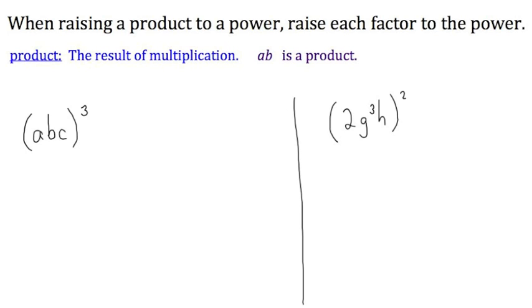Remember that a factor, or other factors, are things being multiplied. So there are three things being multiplied here, so there are three factors: A, B, and C.